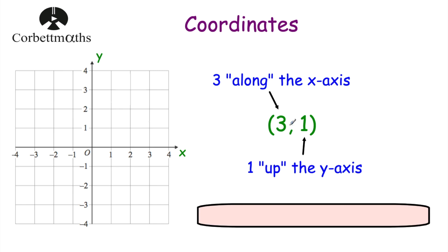Here we've got an example of a point. This is the point 3, 1. The coordinates of this point are 3, 1, and that means 3 along the x-axis. The first number tells us how far along the x-axis to go, so here it's 3. And then the next number is 1 — that tells us how far up the y-axis to go, or down. So here it's 1, so we're going to go 1 up. So this would be the point 3, 1.